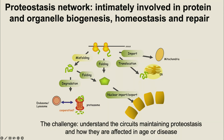The proteostasis network does many very different things in the cell. It helps proteins fold, identifies misfolded proteins, targets them for degradation, and also one very important function is it helps with organelle biogenesis — mitochondria, ER, lysosome, nucleus integrity — and also helps with organelle quality control.